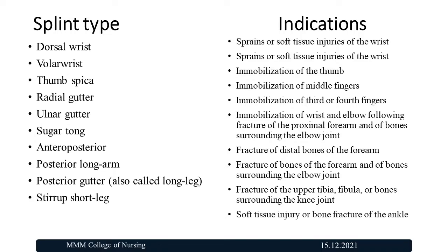Other splint types with their indications: dorsal wrist — wrist sprains or soft tissue injuries; volar wrist — wrist sprains or soft tissue injuries; thumb spica — immobilization of the thumb; radial gutter — immobilization of the middle finger; ulnar gutter — immobilization of the third or fourth fingers; sugar tong — immobilization of the wrist and elbow following fracture of the proximal forearm or bones surrounding the elbow joint; anterior-posterior — fracture of the distal bones of the forearm; posterior long arm — fracture of the forearm bones and bones surrounding the elbow joint; posterior gutter — fracture of the upper tibia, fibula, or bones surrounding the knee joint; stirrup short leg — soft tissue injury or bone fracture of the ankle.